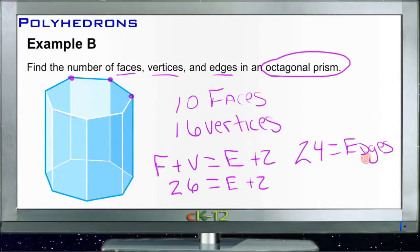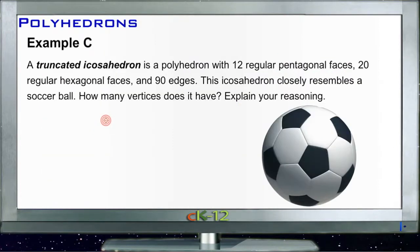For Example C, we have a truncated icosahedron—say that five times fast. It's a polyhedron with 12 regular pentagonal faces, so we have 12 faces that are made of regular five-sided figures, so all the sides are the same and there's five of them.